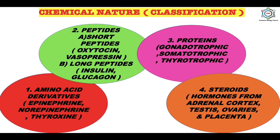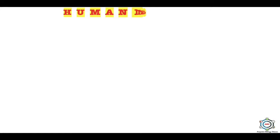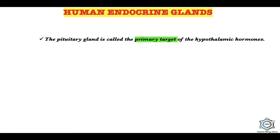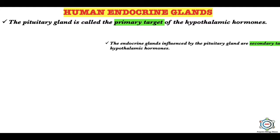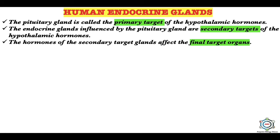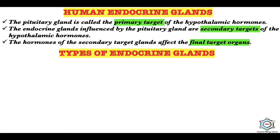In the human endocrine system, a hormone from one gland may stimulate or inhibit another endocrine gland. Hormones of the hypothalamus regulate the pituitary gland, and hormones of the pituitary influence many other endocrine glands. The pituitary gland is called the primary target of the hypothalamic hormones. The endocrine glands influenced by the pituitary are secondary targets of the hypothalamic hormones, and the hormones of these secondary target glands affect the final target organs.